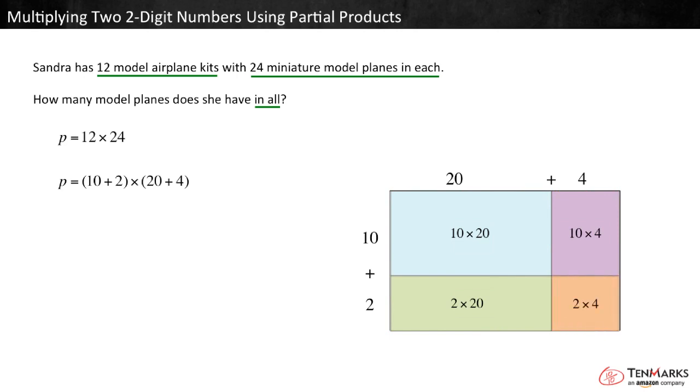The total area of the rectangle is equal to the sum of these partial areas. We can write this as an expression with parentheses: 10 times 20 plus 10 times 4 plus 2 times 20 plus 2 times 4. Now simplify each set of parentheses. In other words, find the area of each part.